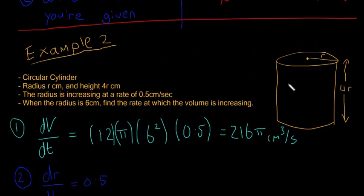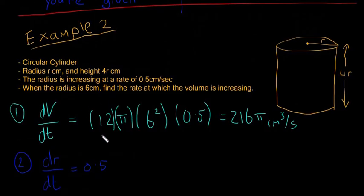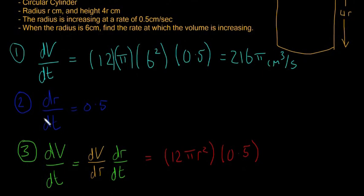Again, we have a circular cylinder. The cylinder is this shape here. The radius is r centimeters, and the height is 4r, like we have shown in the diagram. The radius is increasing at a rate of 0.5 centimeters per second. When the radius is 6 centimeters, find the rate at which the volume is increasing. So we follow our steps. The first one is to write down what we're looking for, which is the rate at which the volume is increasing, dV/dt.